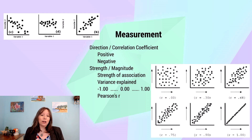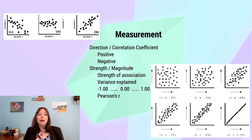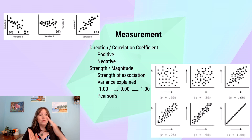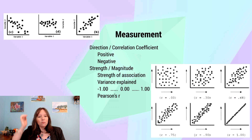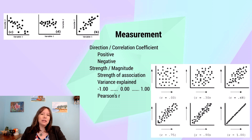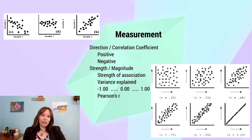In addition to direction, we're also interested in magnitude. We tend to measure magnitude of correlation through a statistic called Pearson's R. Broadly speaking, Pearson's R measures the squish or spread of the dots, and that tells us the strength of the correlation. If there's no correlation and the dots appear completely random, our Pearson's R is 0, meaning there's no correlation whatsoever.